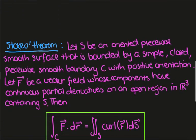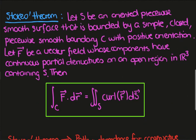So let's recall the statement of Stokes' theorem, which is that we'll let S be an oriented piecewise smooth surface, so just take a smooth surface, for example, bounded by a simple, closed, piecewise smooth boundary C.